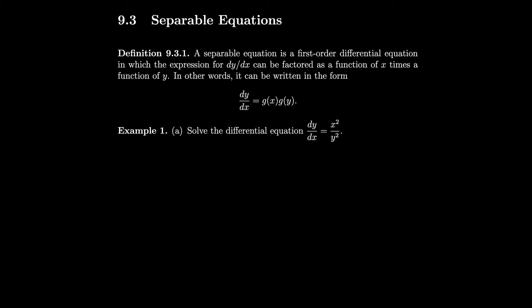This also works for quotient equations, as we'll see from our first example, because we can rewrite quotients as products by taking the denominator and splitting that into its own fraction. So we could rewrite this as 1 over y squared times x squared — it becomes a product and thus it is a separable differential equation.